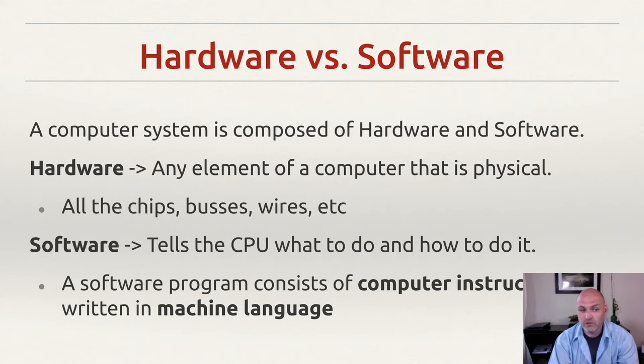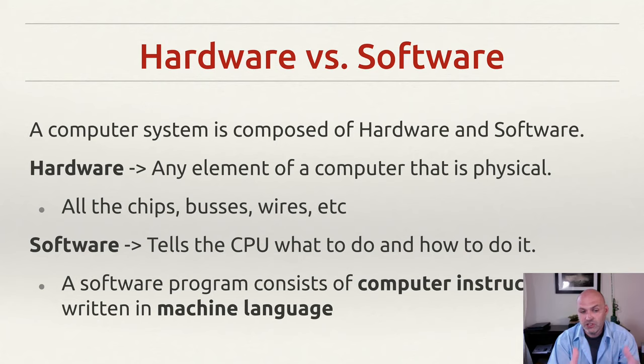Hardware includes all the buses and wires that connect the chips within the computer. Software is anything that tells the CPU what to do and how to do it — these are the instructions we give to the CPU. In a stored program computer, CPU instructions are kept in memory along with the data. These instructions can change since we have a read-write place to store them, which means we can perform different programs. Even most Internet of Things and embedded devices have a memory, even if it's a flash memory, that is flashed with the program they run.